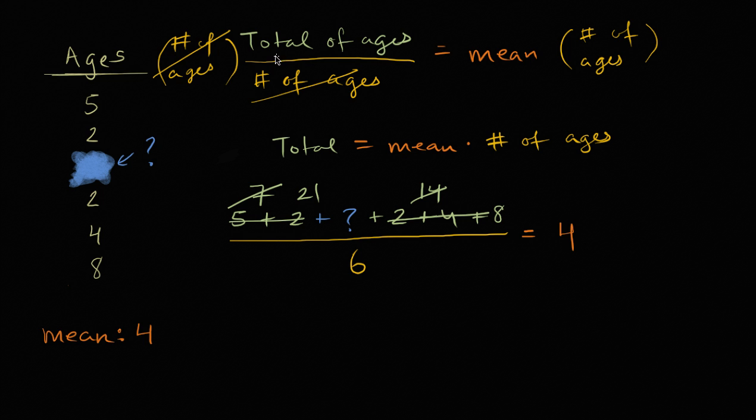Now we can do what we did when we just wrote it all out. We can multiply both sides times the number of ages, the number of data points we have. So we can multiply both sides times six. Six on that side, six on this side. Six in the numerator, six in the denominator, those cancel.